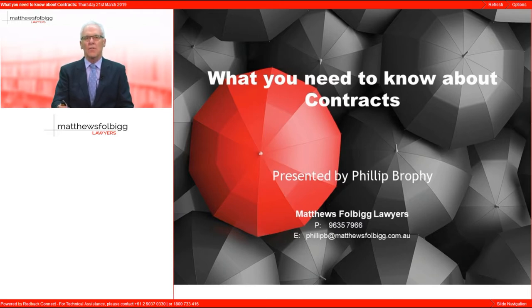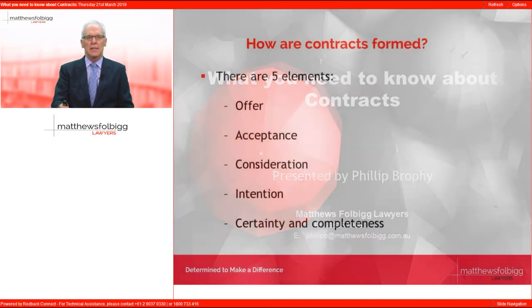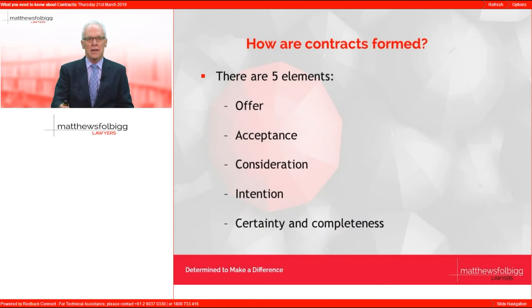So how are contracts formed? Let's deconstruct the elements of a contract. There are five elements: offer, acceptance, consideration, intention, and certainty and completeness.